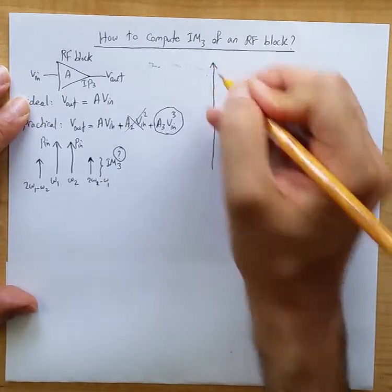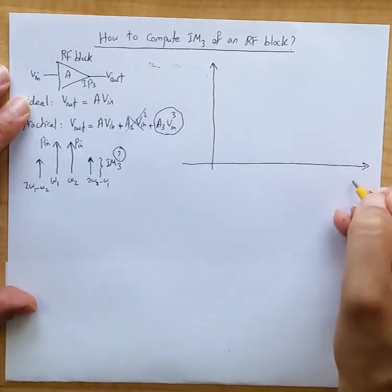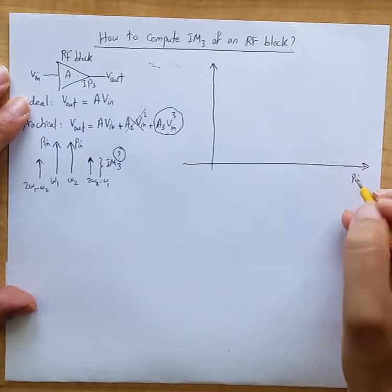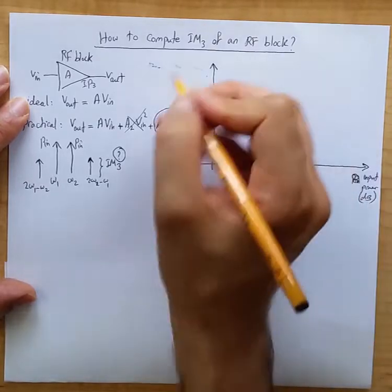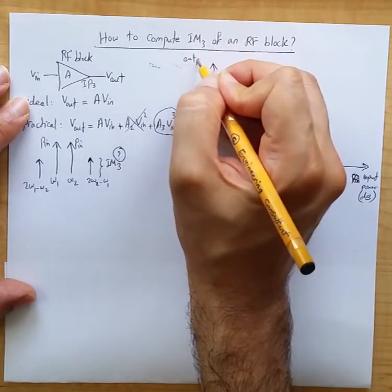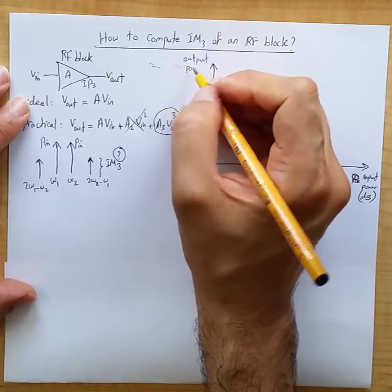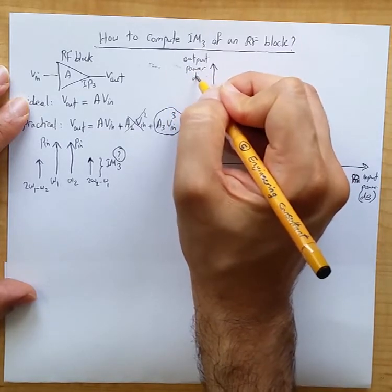This is PN input power. This is input, let's say input power in dB. This is output power in dB.